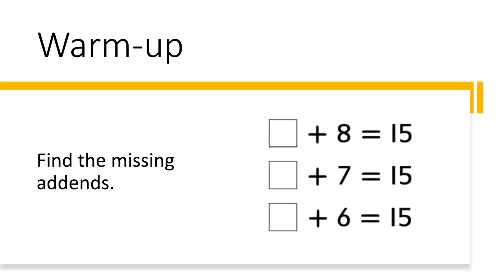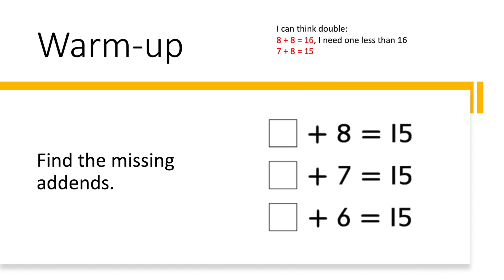There are different ways to do this. One way could be by counting on — start with eight and count on until you get to 15 to see how many more you need. Another way is to think doubles: if eight plus eight equals 16, and you need one less than 16, then that would be seven. So seven plus eight equals 15.